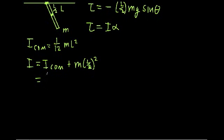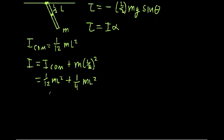Plugging in, the total moment of inertia equals (1/12)mL² plus (1/4)mL². Adding these together, we get that the total moment of inertia is equal to (1/3)mL².